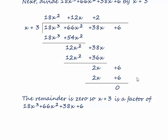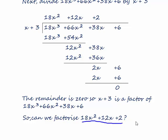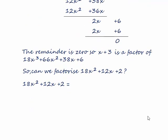So now the next thing we need to know is, can we factorise 18x squared plus 12x plus 2? The first thing we notice is that each of the coefficients is even. So that means we can take a 2 outside a bracket. So we've got 9x squared plus 6x plus 1. You can probably see that 9x squared plus 6x plus 1 is 3x plus 1 squared.